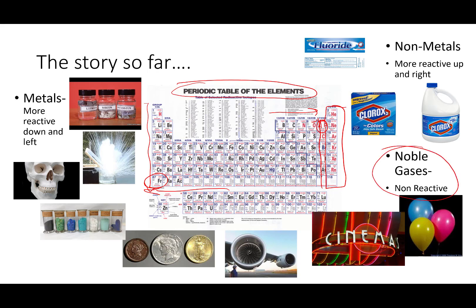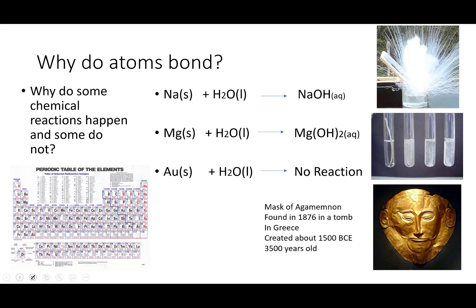In the early 1900s, chemists were piecing this picture together. They had these reactivity trends in the back of their mind and they started asking some really important questions: why do some chemical reactions happen and some do not? So let's take a look at three chemical reactions.